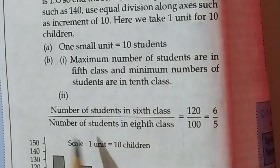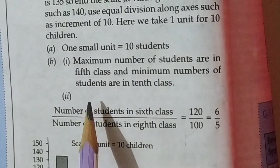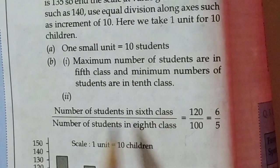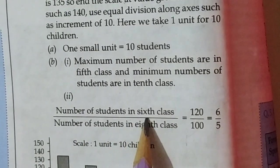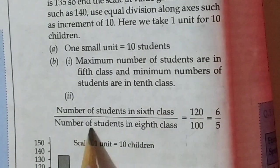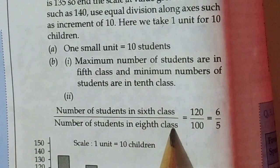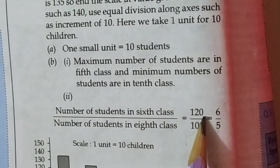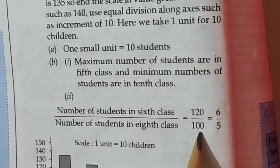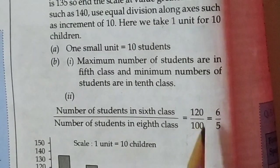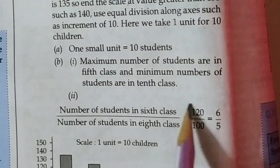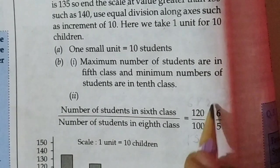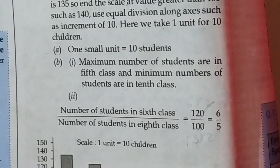Now second answer. In this question, you have to find the ratio of students of class 6th and students of class 8th. So number of students in 6th class upon number of students in 8th class. First of all, 6th class 120 and 8th class 100 equals, cut 0, 0, 6 to the 12 and 5 to the 10. 2 cut. So 6 upon 5 will be the answer.